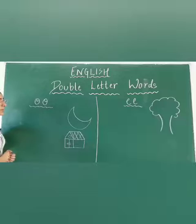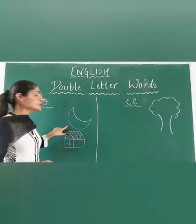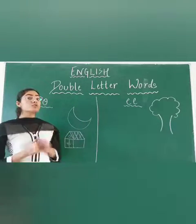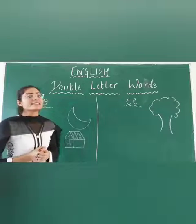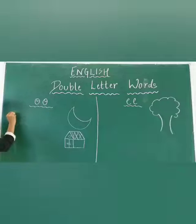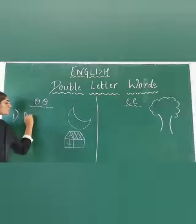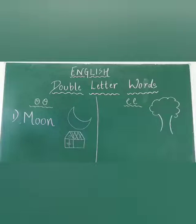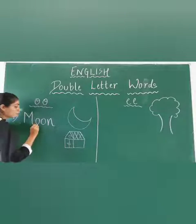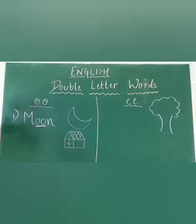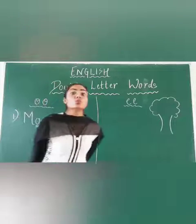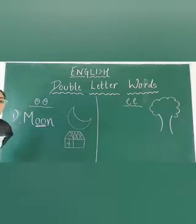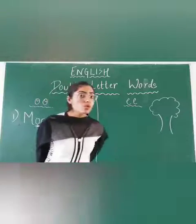Can everyone tell me what is this? This is visible during night time and visible in the sky. Correct! This is moon. So our first word is moon — M, double O, N. The pronunciation is moon.